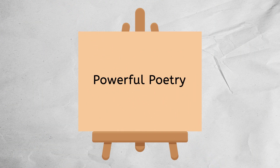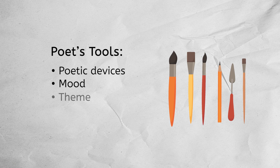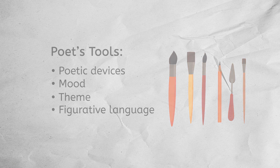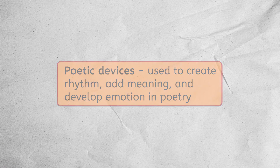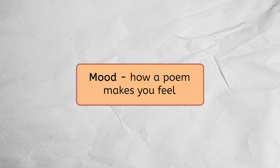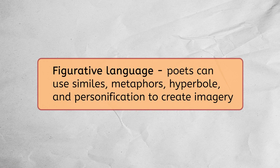A poet uses their own versions of a paintbrush and charcoal to create powerful poetry. These poets' tools include poetic devices, mood, theme, and figurative language. Poetic devices are used to create rhythm, add meaning, and develop emotion in poetry. Mood is how a poem makes you feel, and poets use this tool to evoke emotions in their readers. Poets also create themes that are the message of the poem. We're already familiar with figurative language, where poets can use similes, metaphors, hyperbole, and personification to create imagery and help their audience envision and feel the words of a poem.